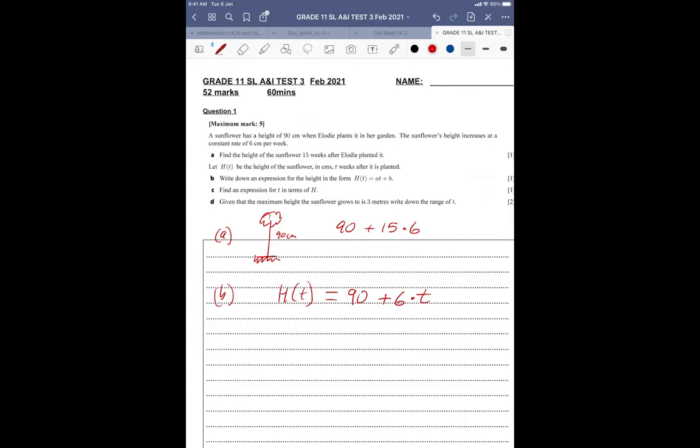So this is nothing to do with your arithmetic sequences and series. You know, the U of N equals U1 plus N minus 1D. This is just thinking about linear modeling.